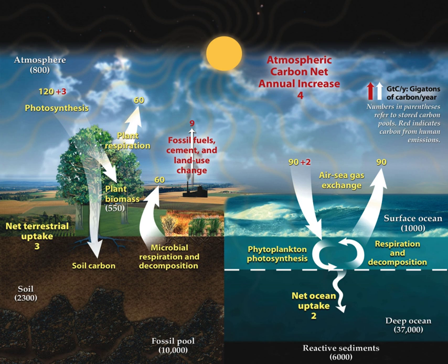Terra Preta, an anthropogenic, high-carbon soil, is also being investigated as a sequestration mechanism. By pyrolyzing biomass, about half of its carbon can be reduced to charcoal, which can persist in the soil for centuries, and makes a useful soil amendment, especially in tropical soils.